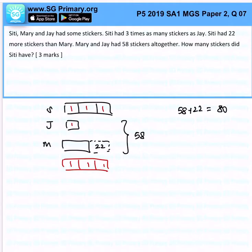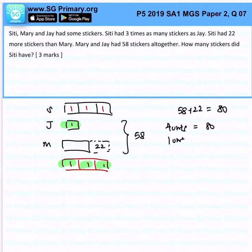So right now, 80 would represent how many units — one unit, two units, three units, four units. Four units represents 80 stickers, so one unit will be 80 divided by 4, which is 20 stickers.